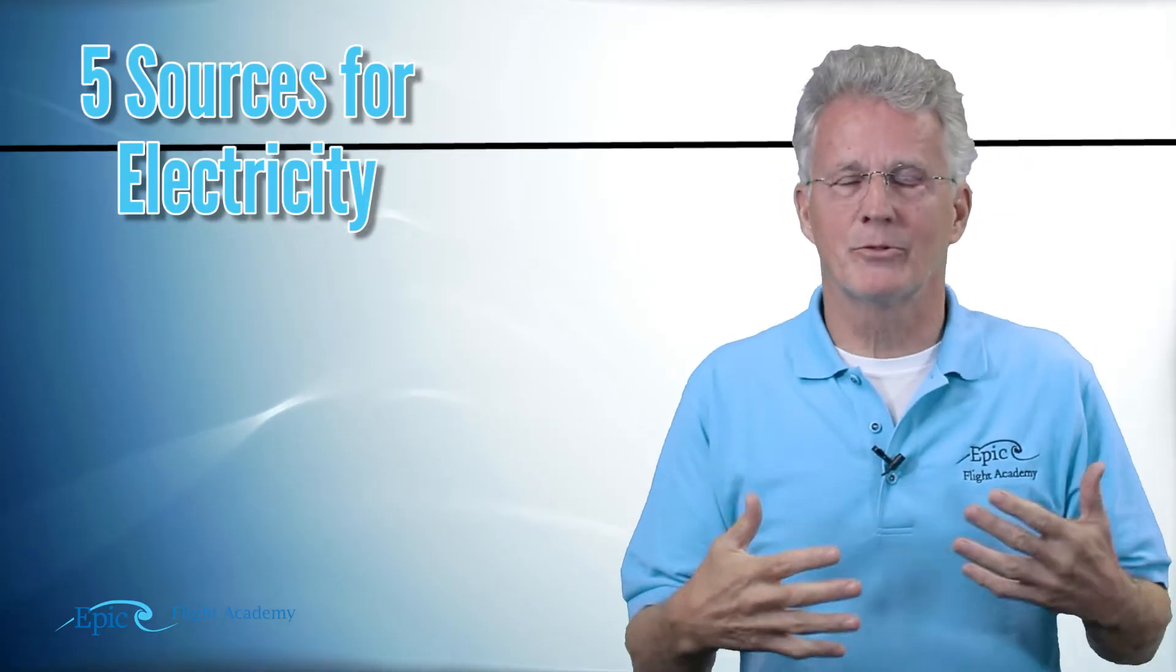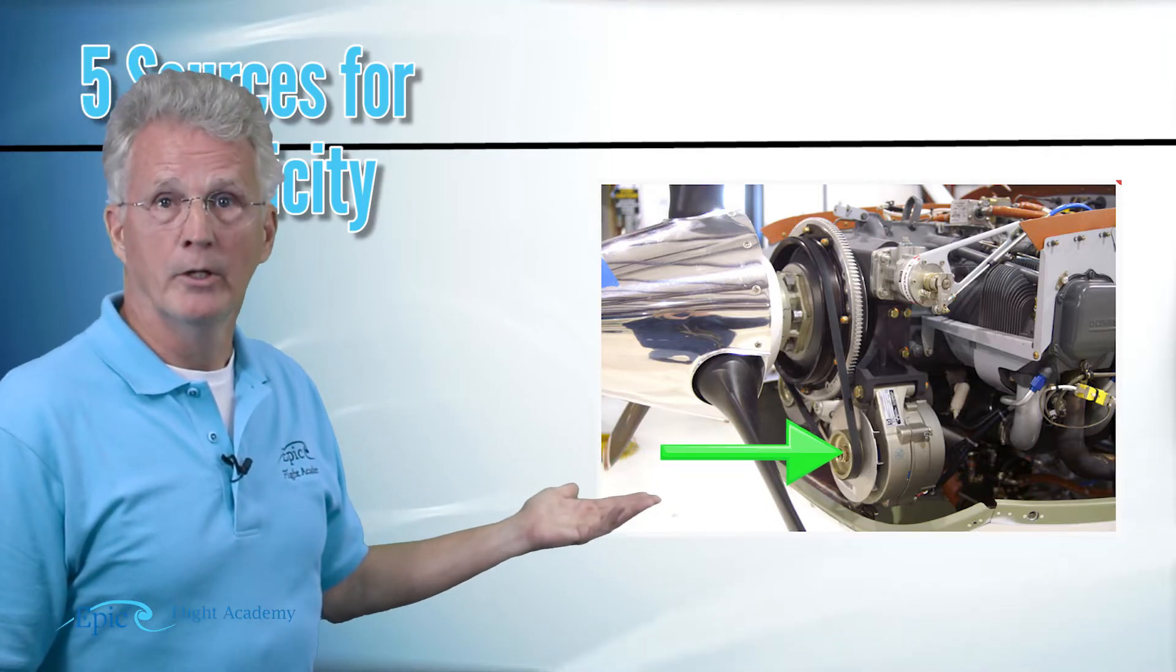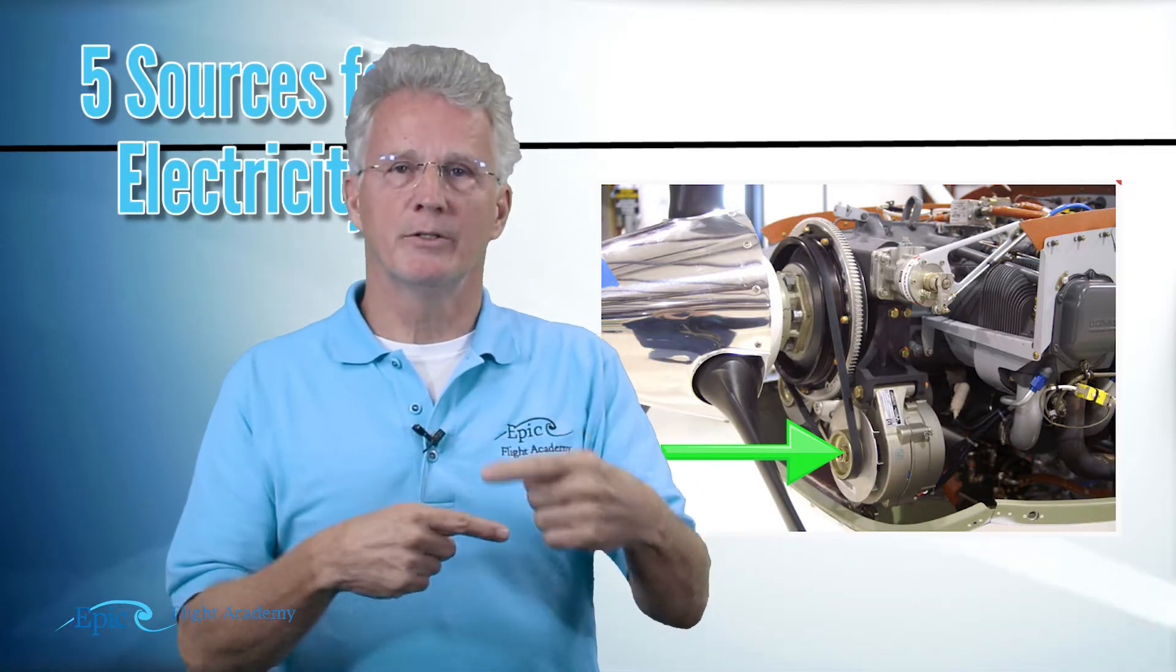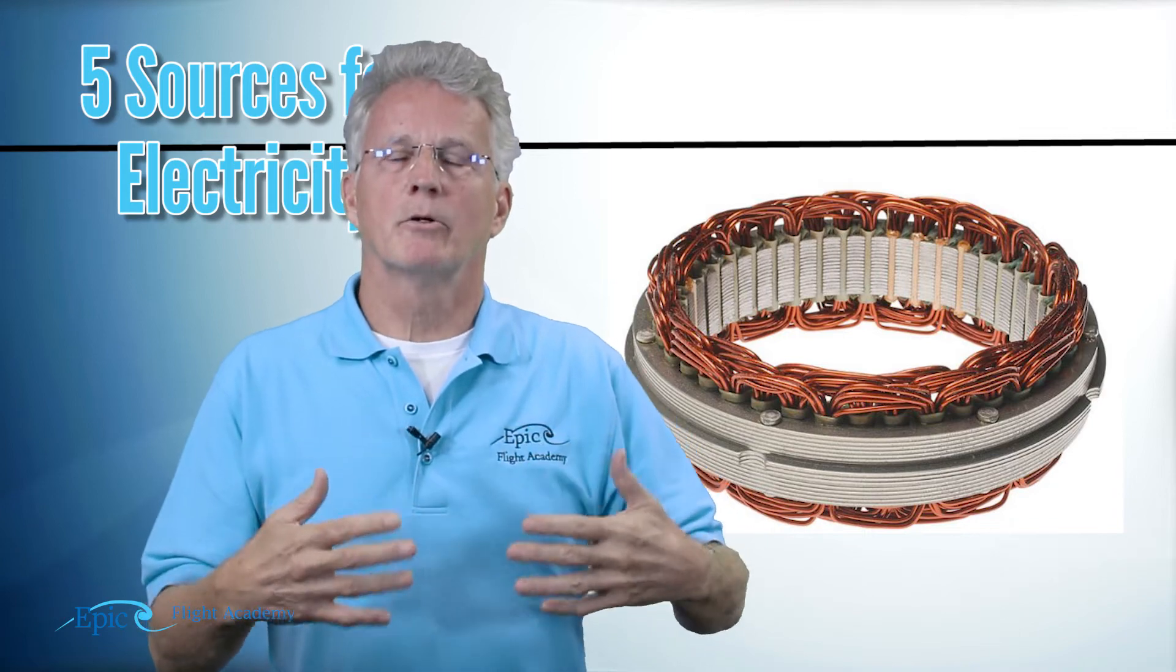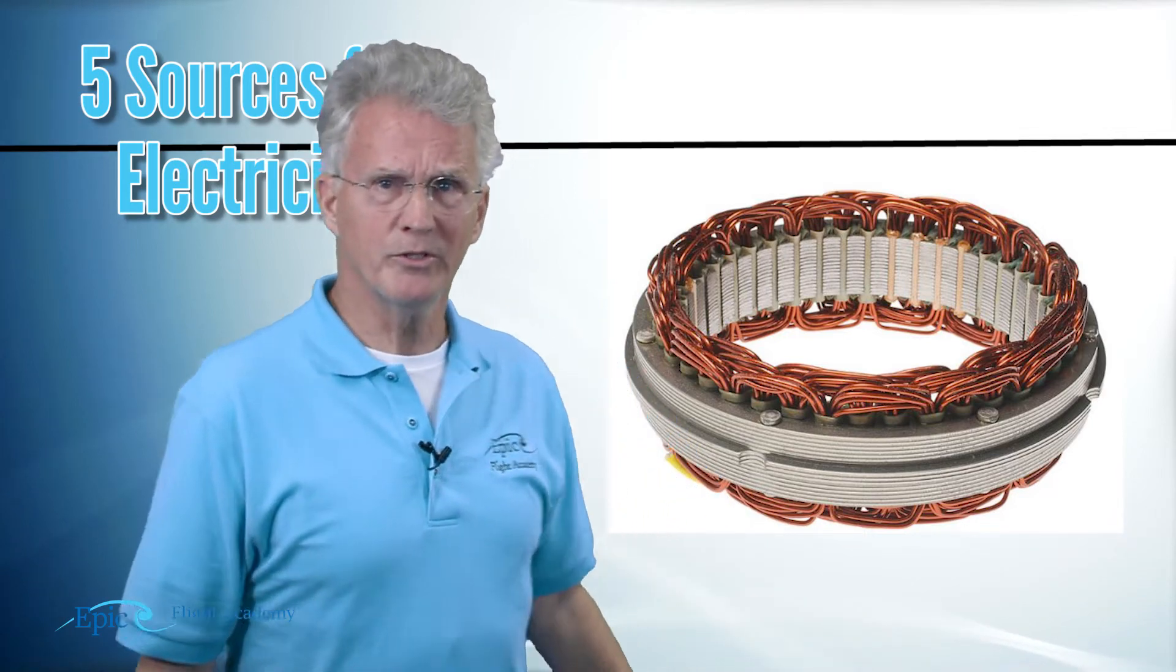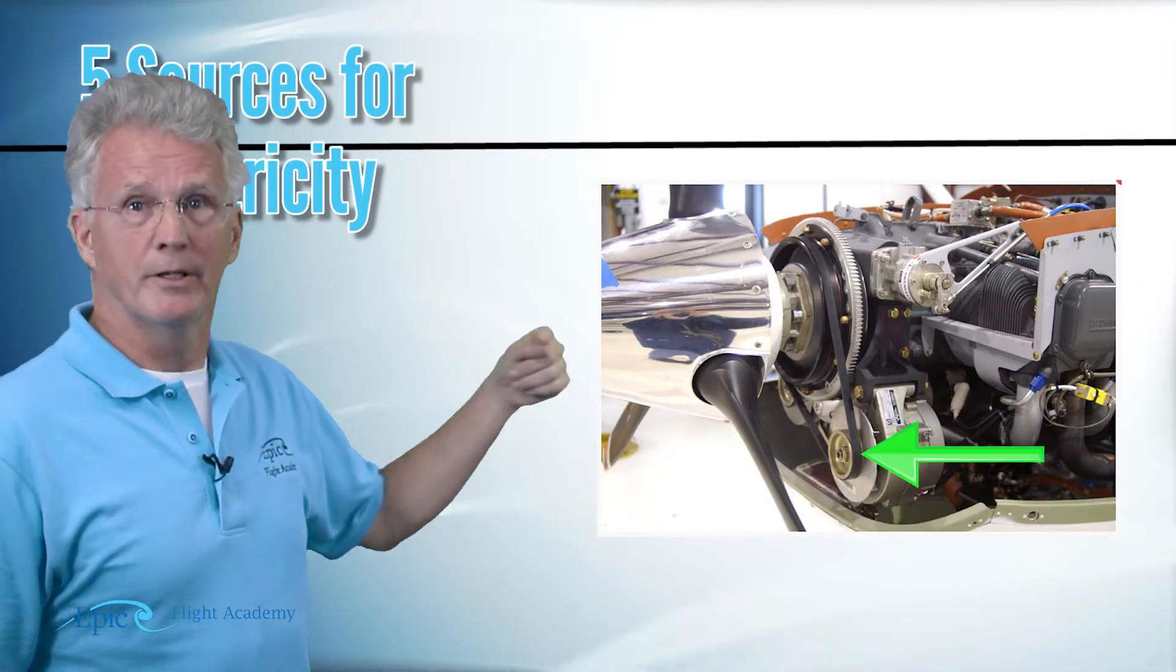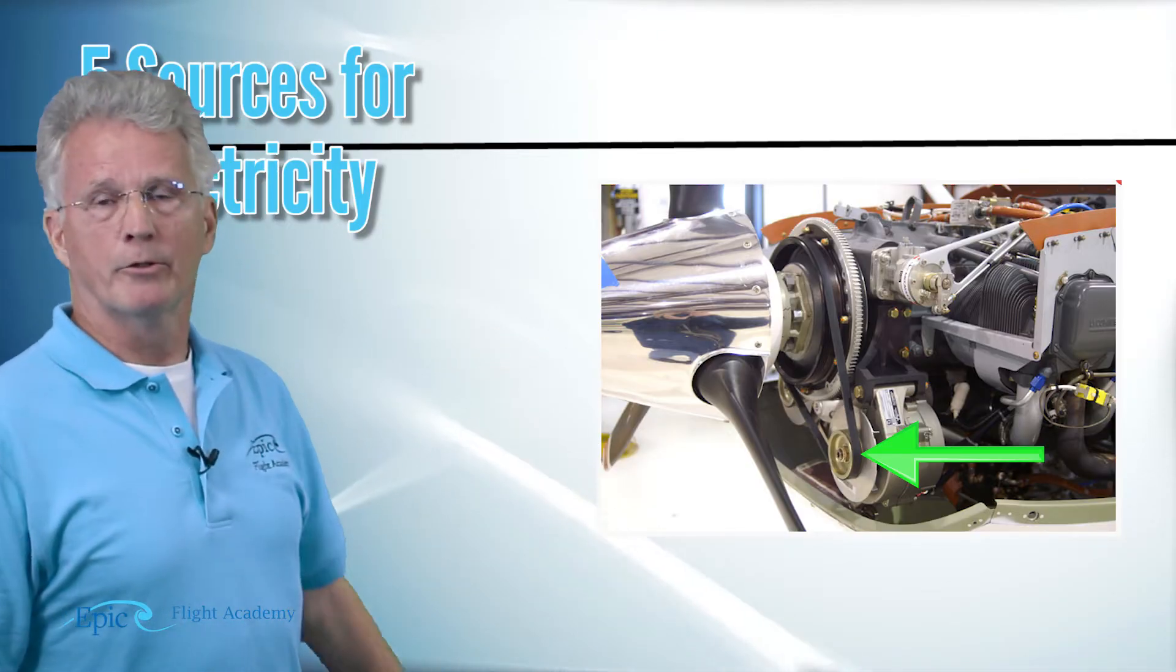The fifth source of electricity is static electricity. There is no real way to capture static electricity for useful purposes, but those are the five types. Now let's take a look at this picture on the 172. You can see your alternator. The alternator is electromechanical. There are many windings of a conductor like copper, and there's an electromagnet in there that becomes an electromechanical source. Notice on that alternator there is a rubber drive belt. This alternator is spun by the engine.